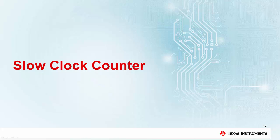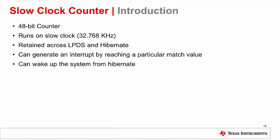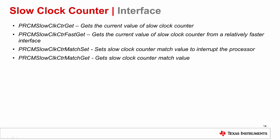In this next section, we will discuss the Slow Clock Counter. The Slow Clock Counter is a 48-bit counter that runs on a slow clock at 32.768 kHz. Unlike the General Purpose Timers, it is retained across low-powered deep sleep and hibernate modes. This timer can generate an interrupt by reaching a match value and has the ability to wake up the system from hibernate. The available APIs allow you to see and edit the clock counter match value and check the current value of the timer.